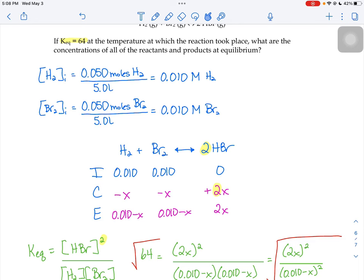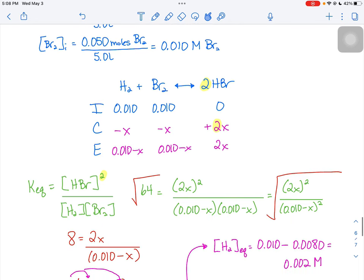With our equilibrium expression, we have to take that hydrobromic acid and square it due to that two once again in the balanced chemical equation. Products over reactants, hydrogen and bromine, don't have coefficients, so they don't have exponents.